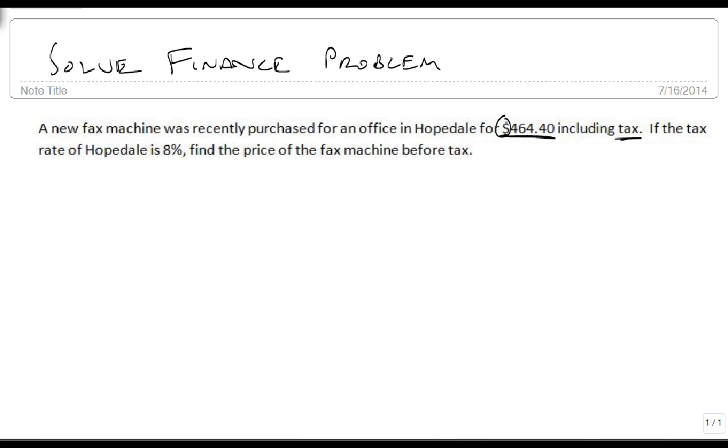Well, what we have is three things that we need to know. We need to know the original price, we need to know the tax rate, and we need to know the amount spent, the amount total, including tax.